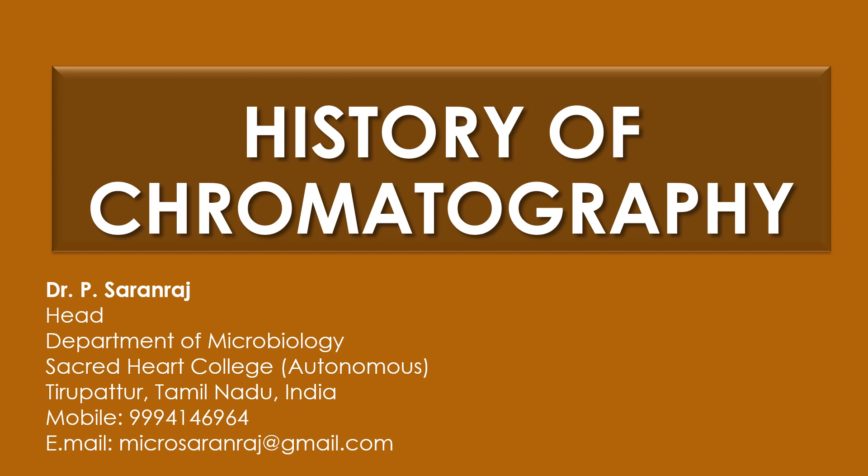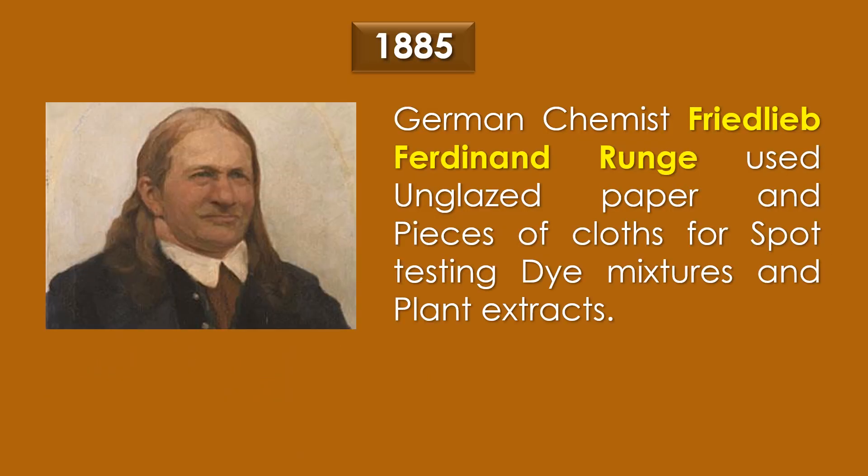Dear viewers, greetings. In this video we are going to see the history of chromatography. The history of chromatography was started in 1885. A German chemist Friedlein Ferdinand Röhm used unglazed paper and pieces of cloths for spot testing of dyes and plant strands.